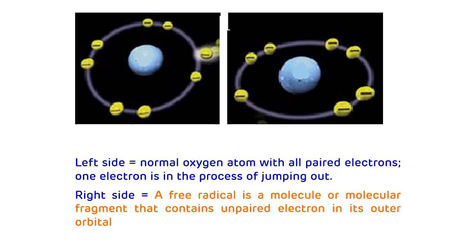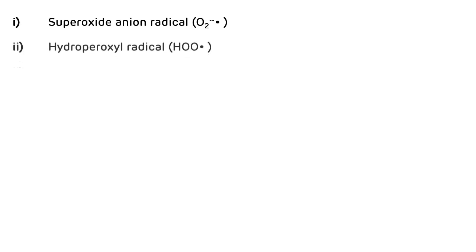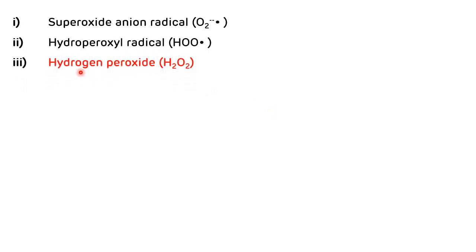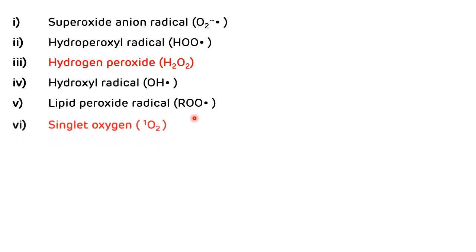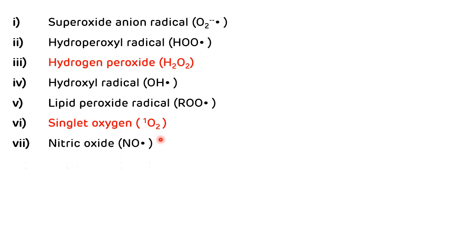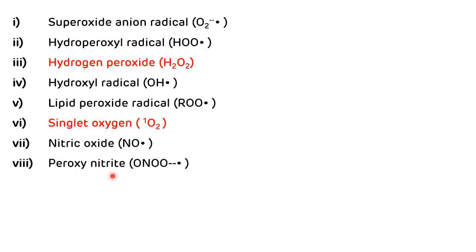Now we will see the types of free radicals and reactive oxygen species. The first one is superoxide anion radical, second is hydroperoxide radical, third is hydrogen peroxide, fourth is hydroxyl radical, fifth is lipid peroxide radical, sixth is singlet oxygen, seventh is nitric oxide, and the last one is peroxynitrite.